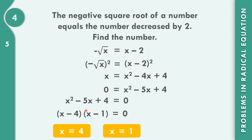But then, which value satisfies the original equation — 4 and 1, or 4 only, or 1 only? Let us check. Negative square root of 4 means negative 2. On the right side, 4 minus 2 equals positive 2. So negative 2 is not equal to positive 2, meaning x equal to 4 is not the answer. For x equal to 1: negative square root of 1 is negative 1. On the right side, 1 minus 2 is negative 1. Negative 1 equals negative 1, so the only answer is positive 1.